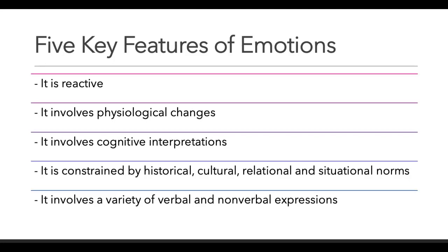The next element is that emotions involve physiological changes. When we're feeling certain kinds of emotions, there are physiological changes happening in our body. For instance, when you're angry, what part of your body feels the heat? Or when you're feeling sad, which part of your body feels the heaviness of the emotion? We understand that there are physiological changes happening when we are experiencing emotions.